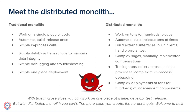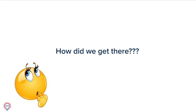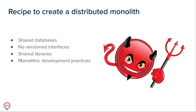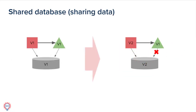The more code you implement, the harder and harder it gets — and we know that complexity grows exponentially. So how did you get there? I can share a few common reasons how teams and organizations end up in that mess. I'll start with the simple ones that are easy to understand. The first one is a shared database.